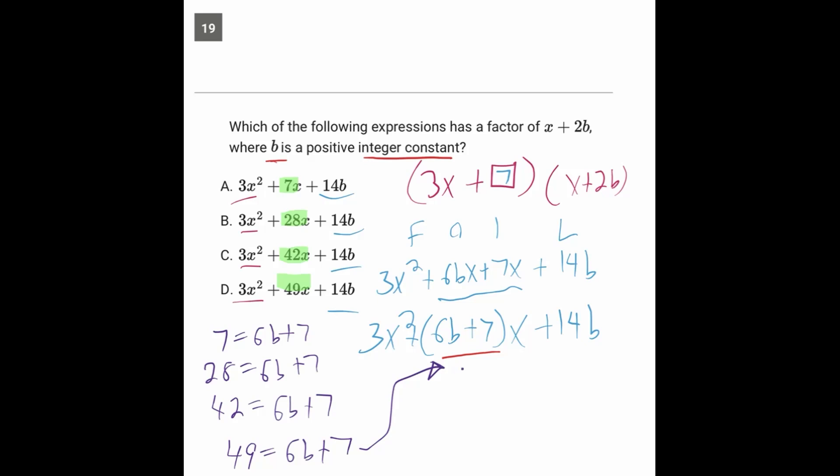Because if we subtract 7 from both sides, we'll have 42 equals 6b. And if we divide both sides by 6, we'll have b equals 7. So we just got b to work out as an integer when we were using the 49 that came from answer choice D to this question.